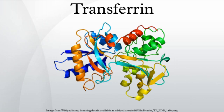Transferrin has a molecular weight of around 80 kDa and contains two specific high affinity Fe binding sites. The affinity of transferrin for Fe is extremely high but decreases progressively with decreasing pH below neutrality. When not bound to iron, it is known as apotransferrin.